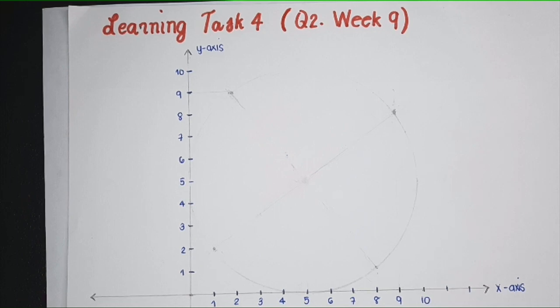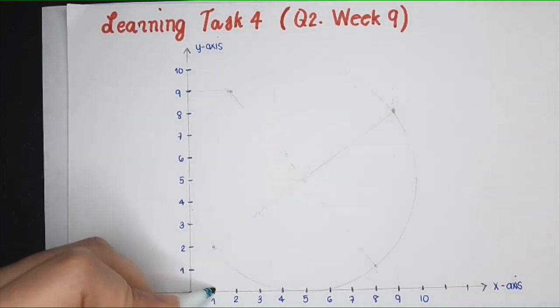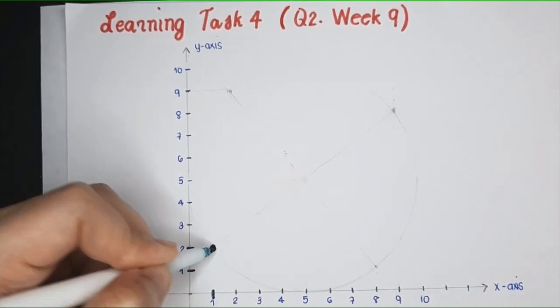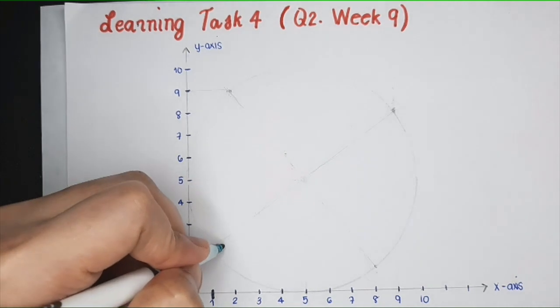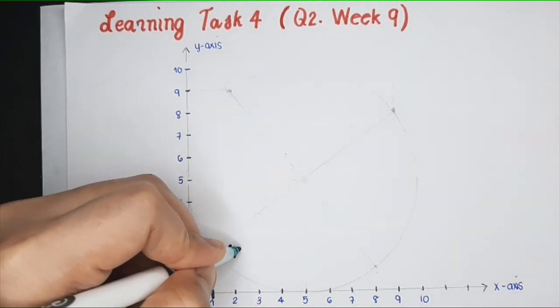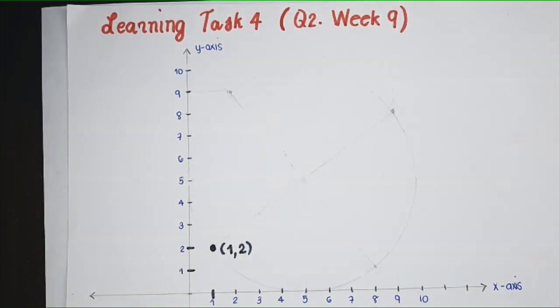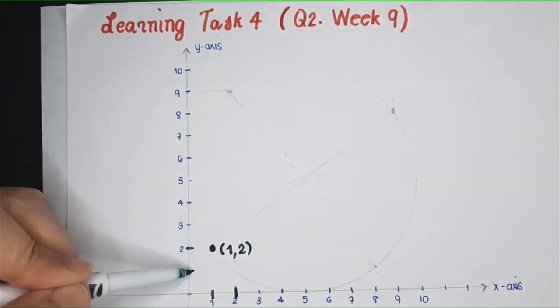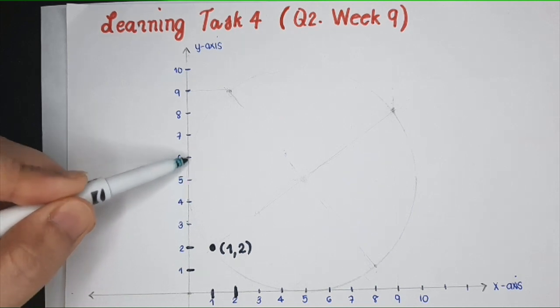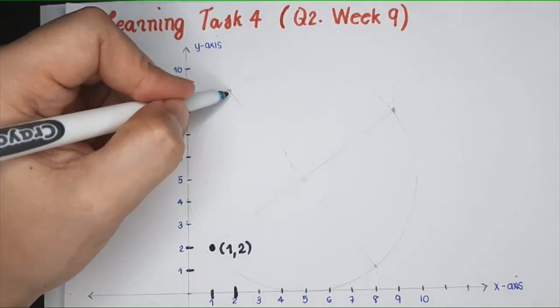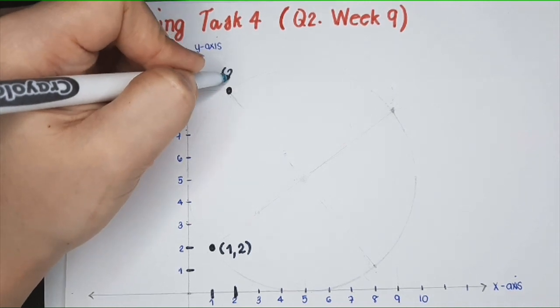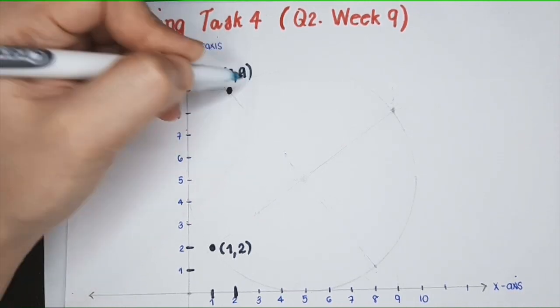First, we have (1,2). So where is that? This is the point (1,2). Let us label this. Next is (2,9). So, you count 2 on the x-axis, then count 9: 1-2-3-4-5-6-7-8-9. So here, this is the point (2,9).